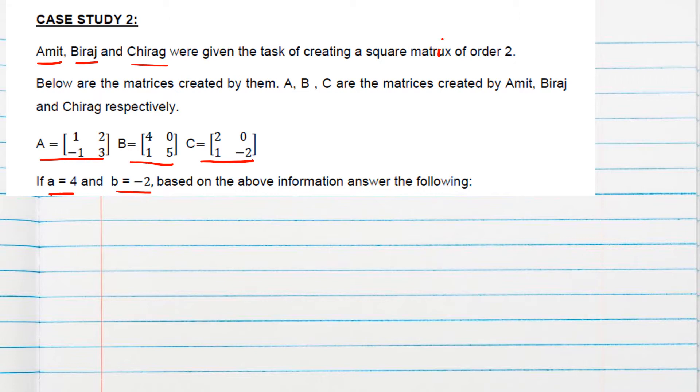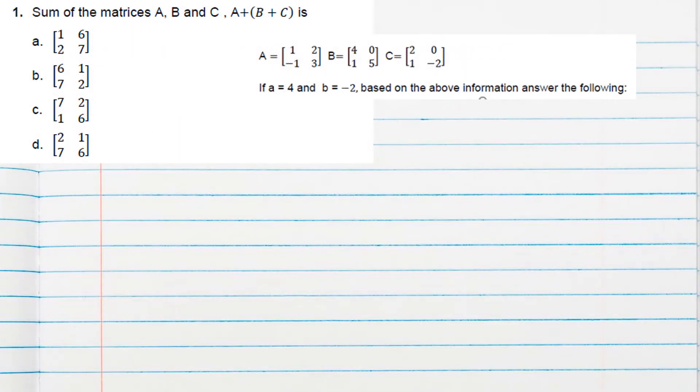Question number one is the sum of the matrices A, B, and C - that's A+B+C. A, B, and C are given to us. We can add all three together, meaning we add corresponding elements. 1+4+2 equals 7. Now keep checking the options.